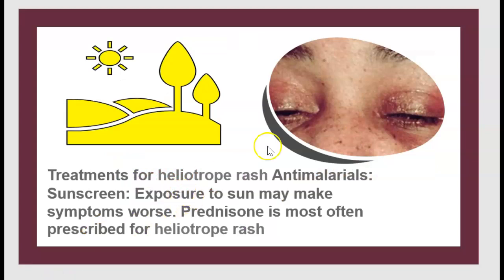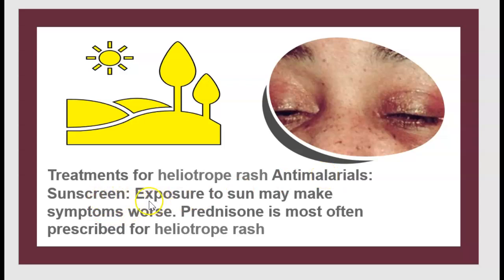Among the symptoms is the heliotrope rash. The treatment for the heliotrope rash includes anti-malarials and sunscreen, as exposure to sun may make symptoms worse. Prednisone is most often prescribed for heliotrope rash.